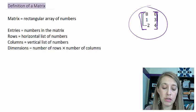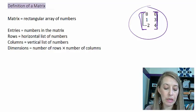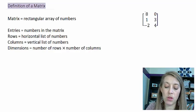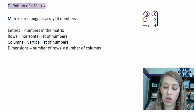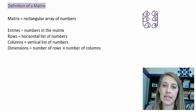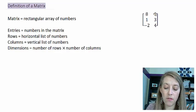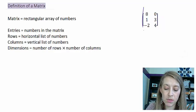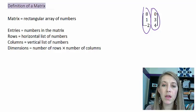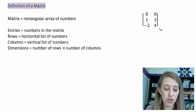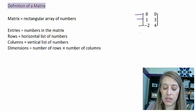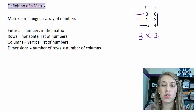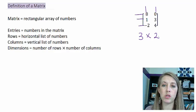Some other definitions you need to know: the entries are each number inside the matrix — so the 8 is an entry, the 0 is an entry, and so on. Each of these numbers is classified as an entry. The rows are the horizontal list of numbers, and the columns are the vertical list of numbers. Sometimes we need to talk about the dimensions of the matrix. The dimensions are the number of rows — in this case three rows — times the number of columns — in this case two columns. So the dimensions are a three by two matrix.